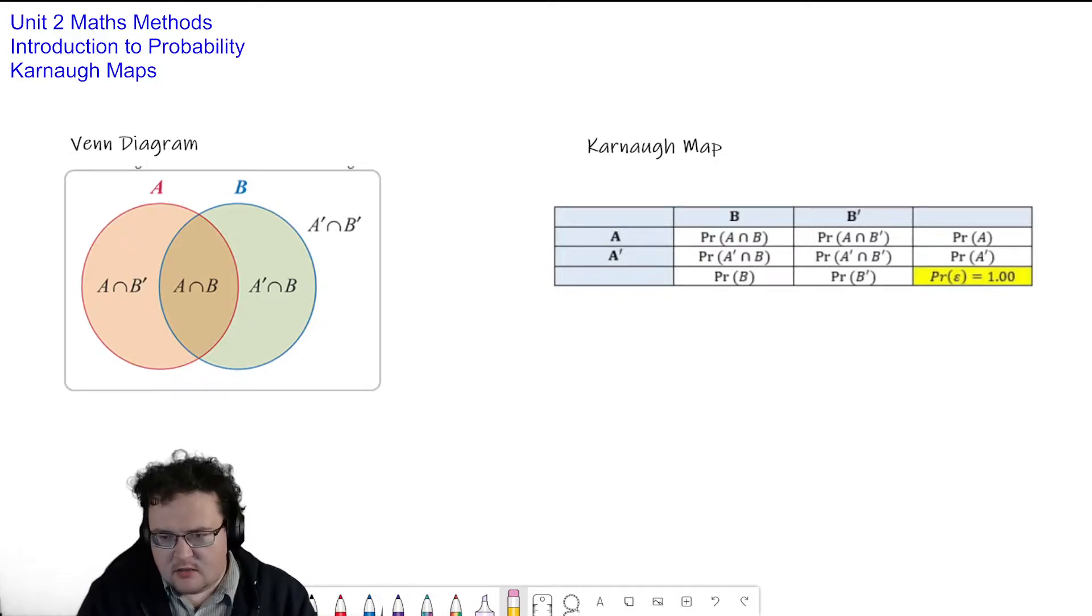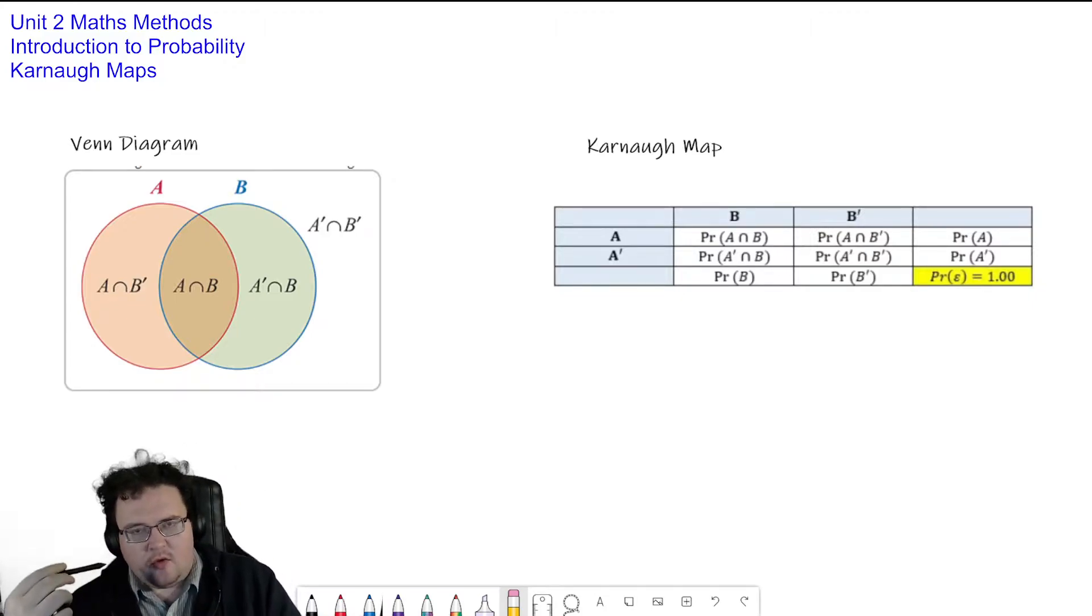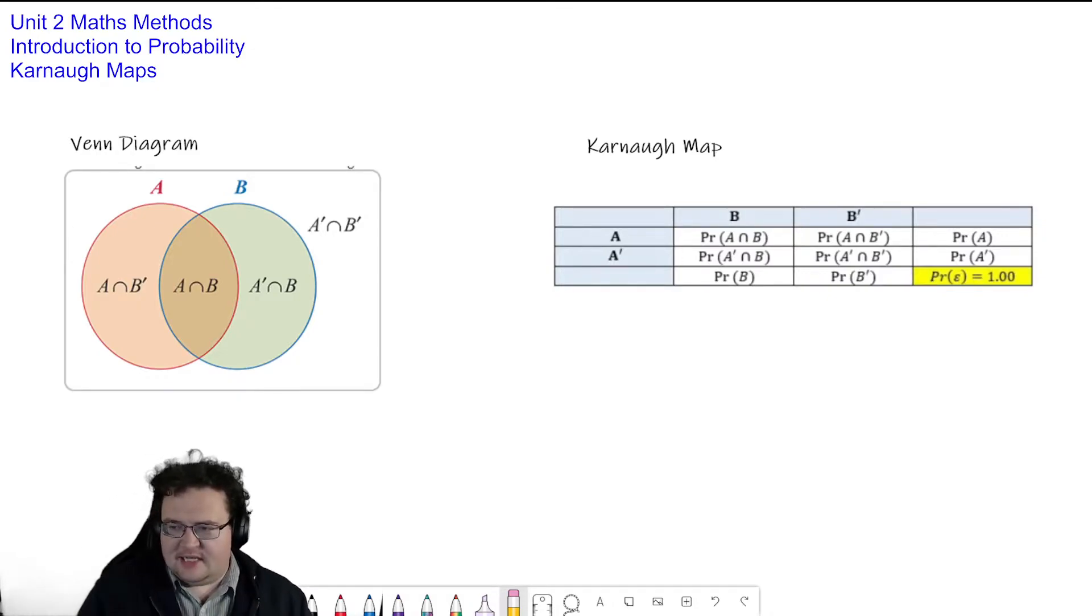A and B, not A and B, and then not A and not B. And the reason why that is useful is that we can combine all of those into what is called a Karnaugh map, which is what I've got in the table to the right over there. And what it does is it represents the Venn diagram and all of the sections inside a Venn diagram in such a way that we can use that to calculate probabilities.